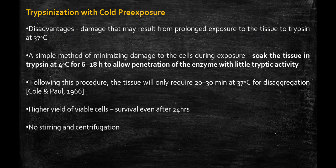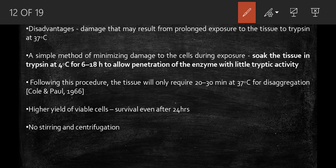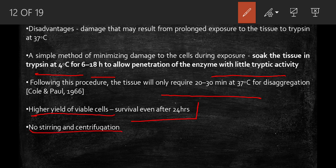A main disadvantage of warm trypsin is that prolonged exposure at 37°C can damage or kill cells. To minimize this, cold trypsin keeps tissue soaked in trypsin at 4°C for 16 to 18 hours, allowing enzyme penetration with little tryptic activity. This procedure then requires only 20 to 30 minutes at 37°C for higher yield of viable cells. Stirring and centrifugation steps are not needed because the long, low-temperature incubation replaces them.